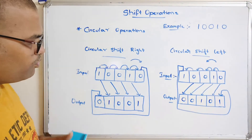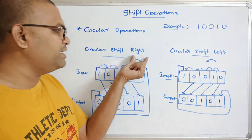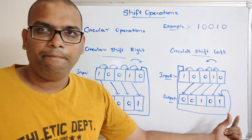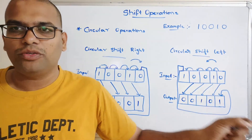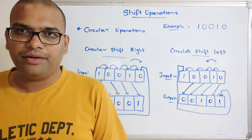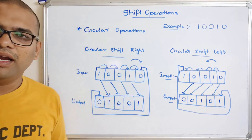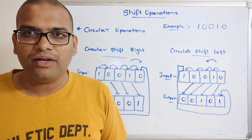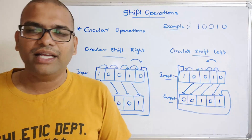In summary: in right shift the MSB bit should be filled, and in circular left shift the LSB bit should be filled. Remember, arithmetic shift left is practically not possible because it may change the sign bit. These are all the shift operations we will use in further sessions. If you have any doubts, post them in the comments. Like, share, and subscribe to our channel. Thanks for watching.